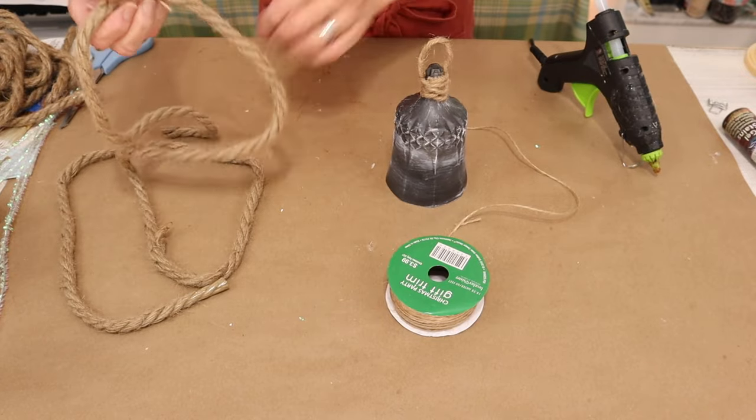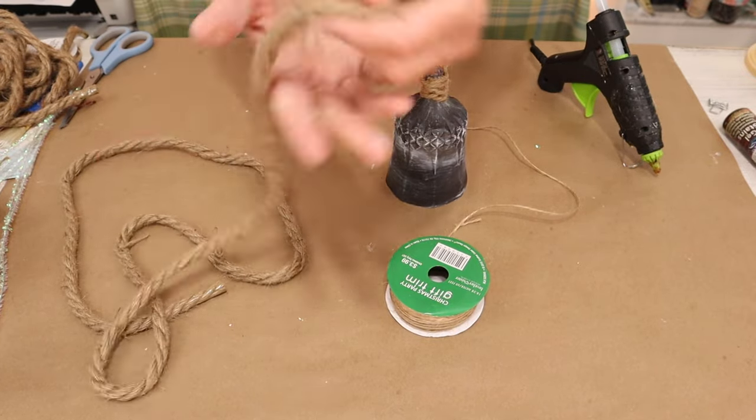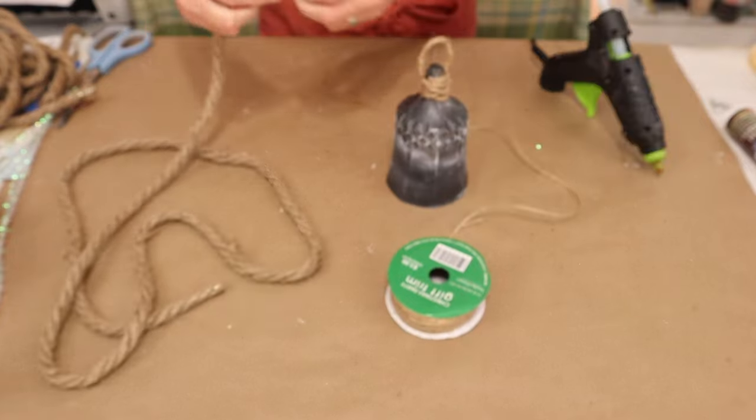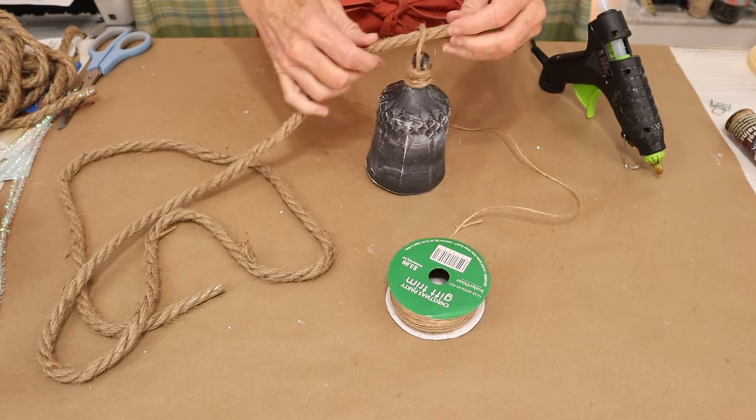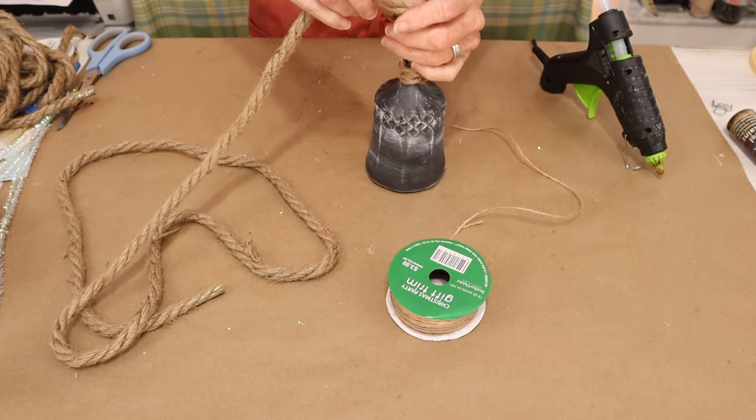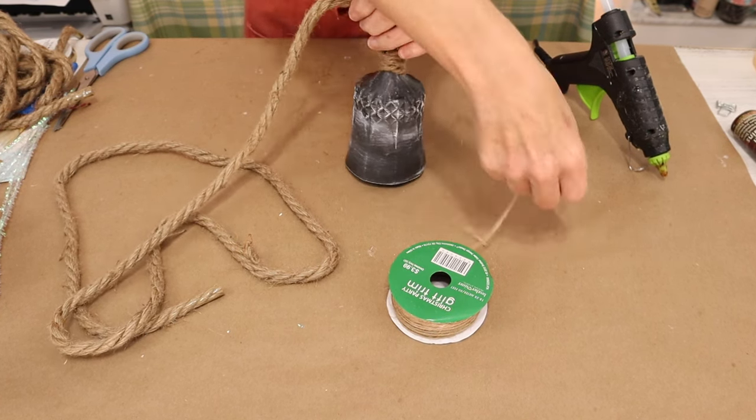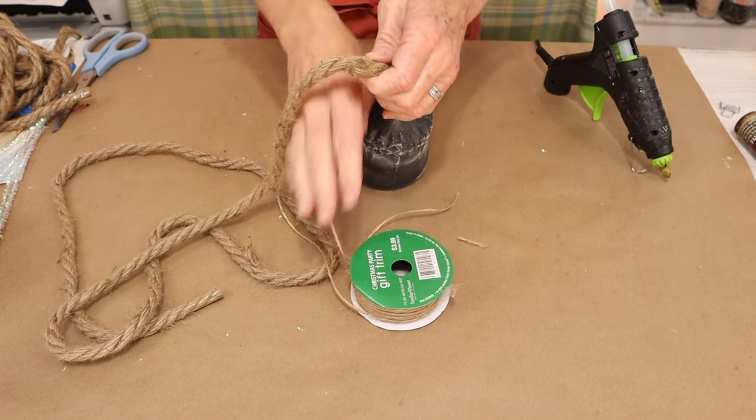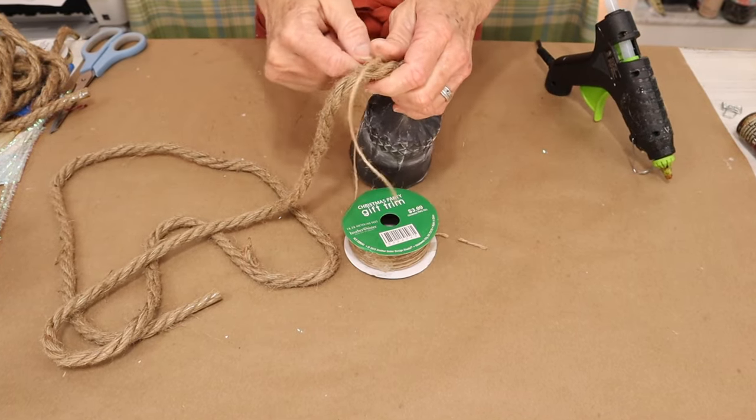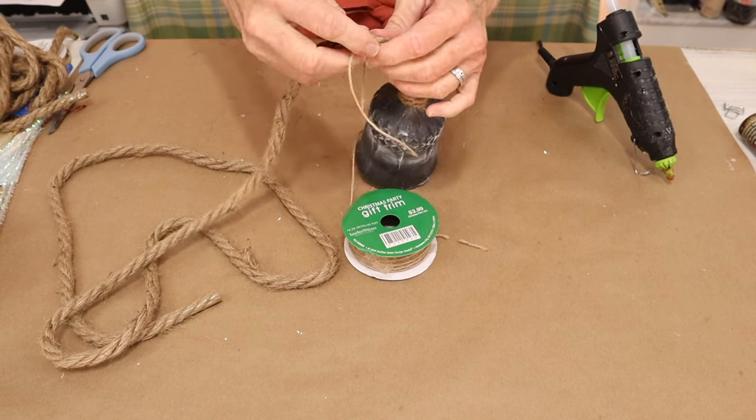But I'm going to be turning mine into a set of three that are going to be dangling from this jute rope. I purchased this jute rope from the Dollar Tree and I just start by taking a piece of the jute rope, wrapping it through the top part or the hanger part of our bell, and then I just secure it with some of the thinner jute twine.